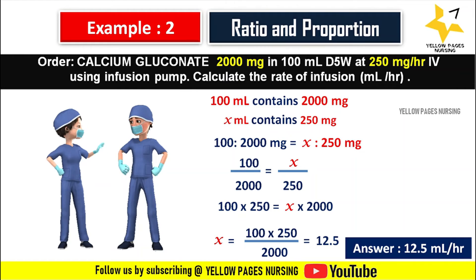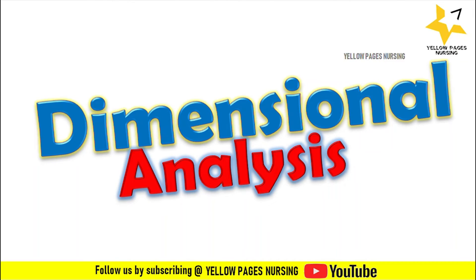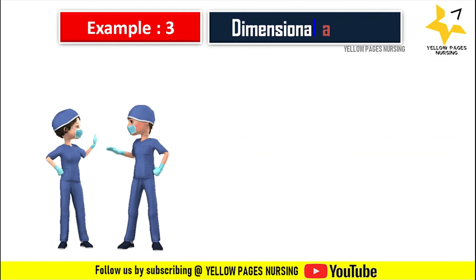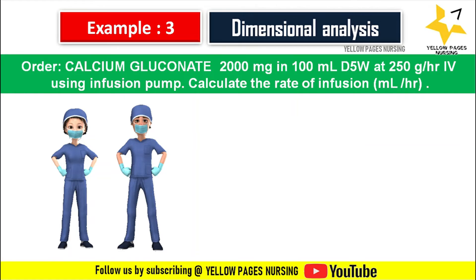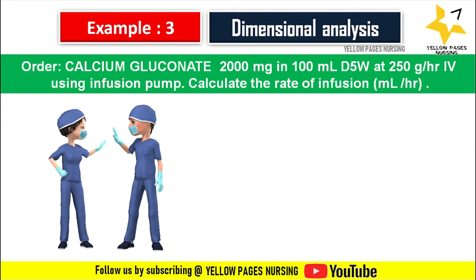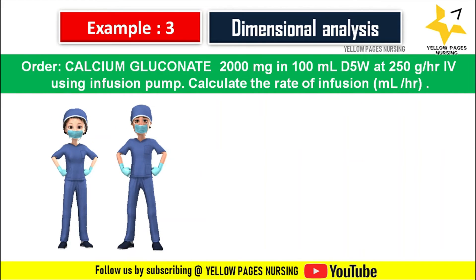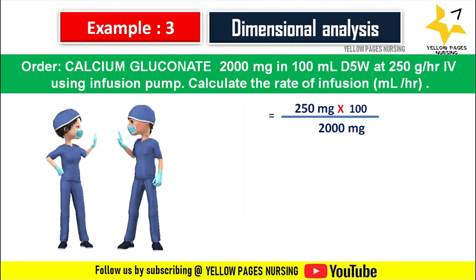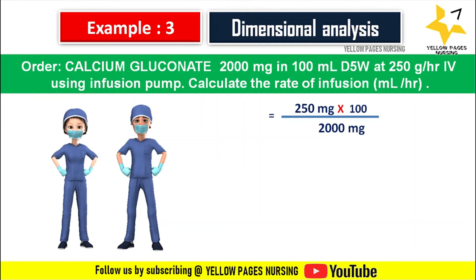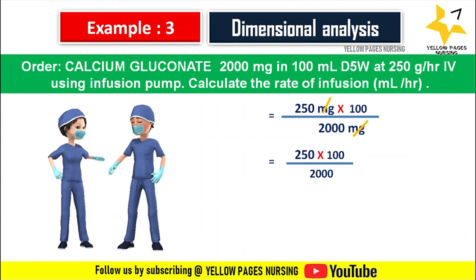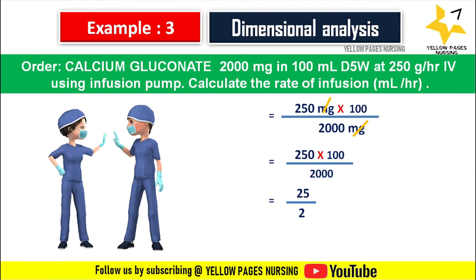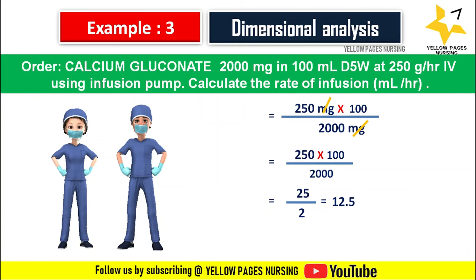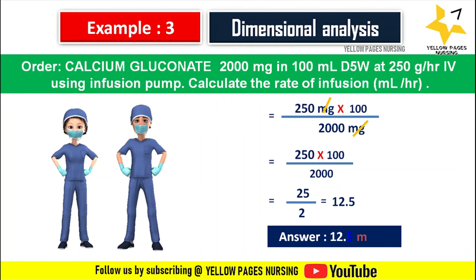Using dimensional analysis, let's do the example. Doctor's order is calcium gluconate 2000 mg in 100 ml D5 water at 250 mg per hour IV using infusion pump. Calculate the rate of infusion, that is ml per hour. This gives: 250 mg multiplied by 100 divided by 2000 mg — the mg units cancel — giving 250 multiplied by 100 divided by 2000, which equals 25 divided by 2, giving 12.5 ml per hour. We set 12.5 ml per hour in the infusion pump.